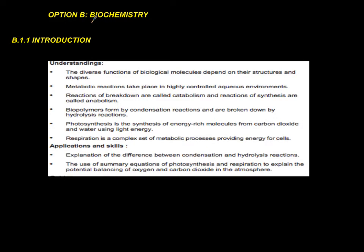Biochemistry is option B of IB chemistry, and I advise it to students who have a background in biology and are doing chemistry. This might be one of the easiest options for you to take. For every subtopic I'm going to give you the relevant piece from your syllabus regarding understanding, application, and skills in terms of problem-solving.